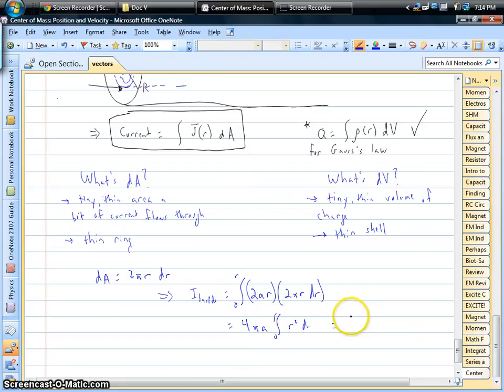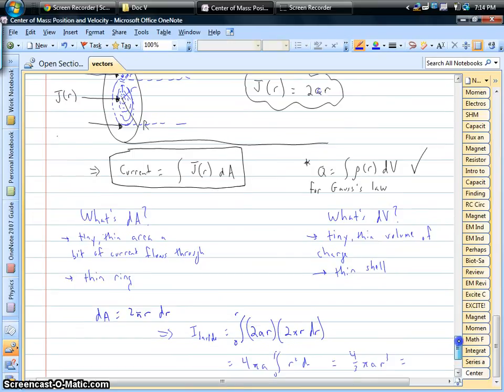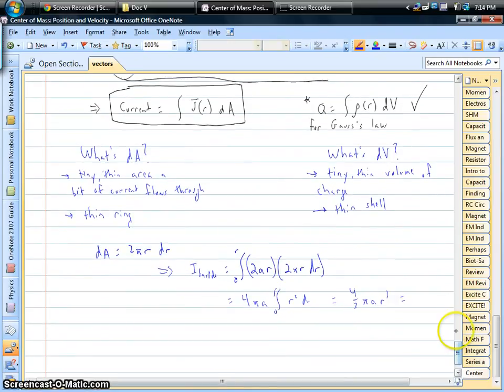So we get four-thirds pi A little r cubed. And that's going to be the current inside of that Amperian loop that we're after, going through that cross-sectional area.